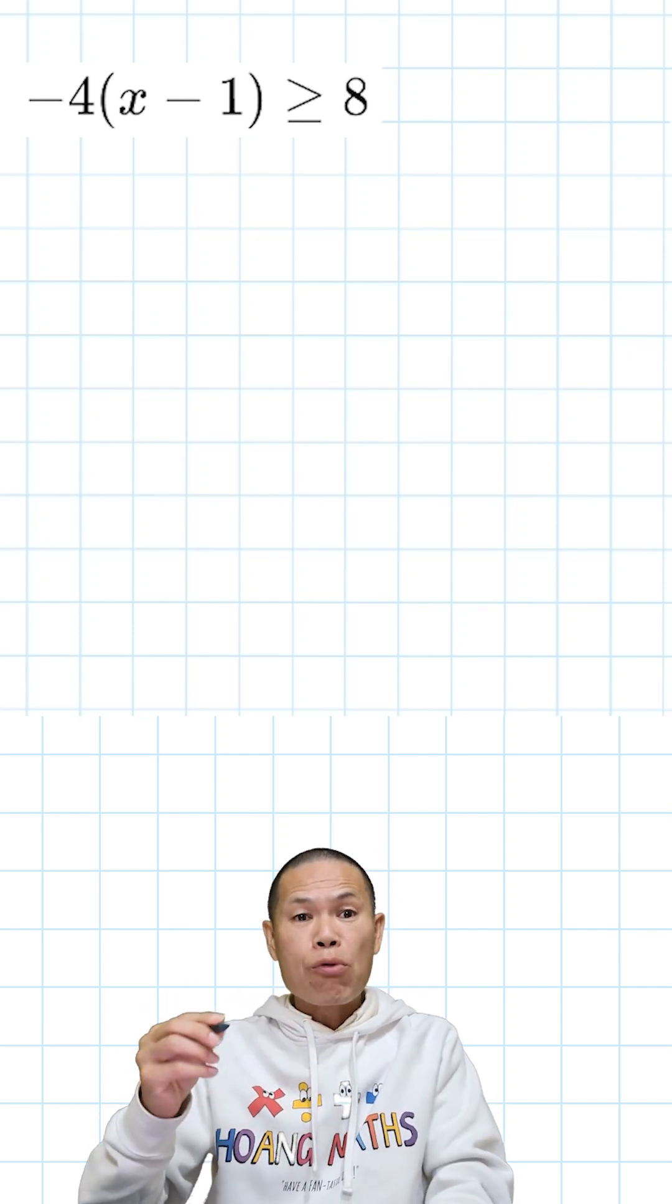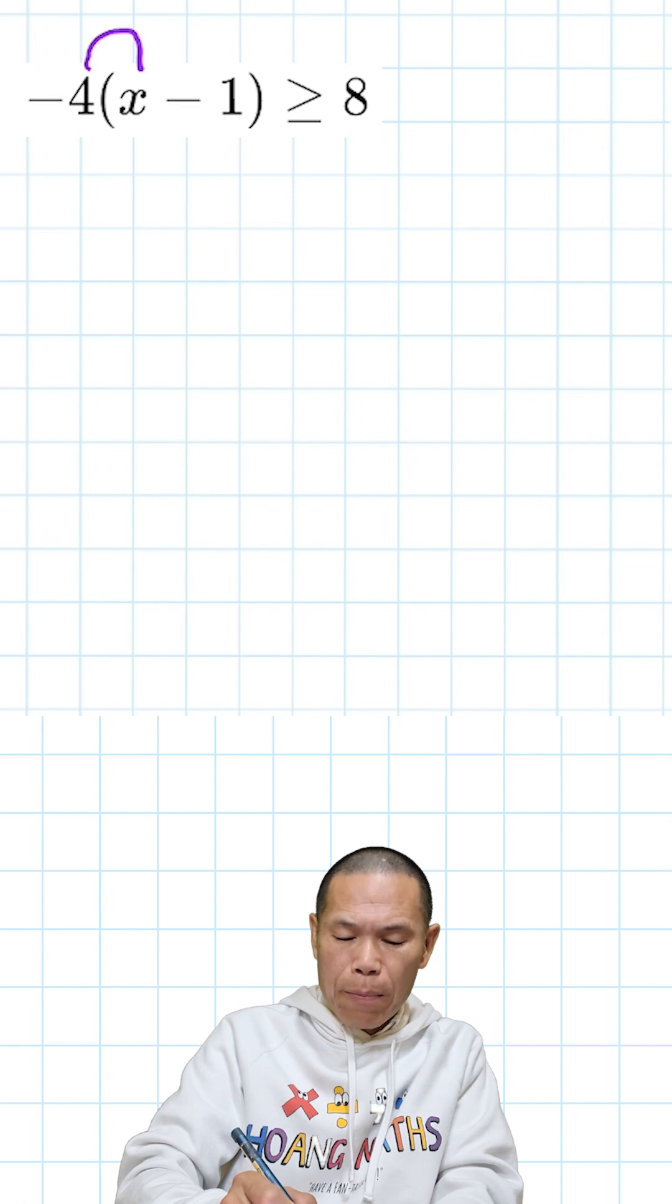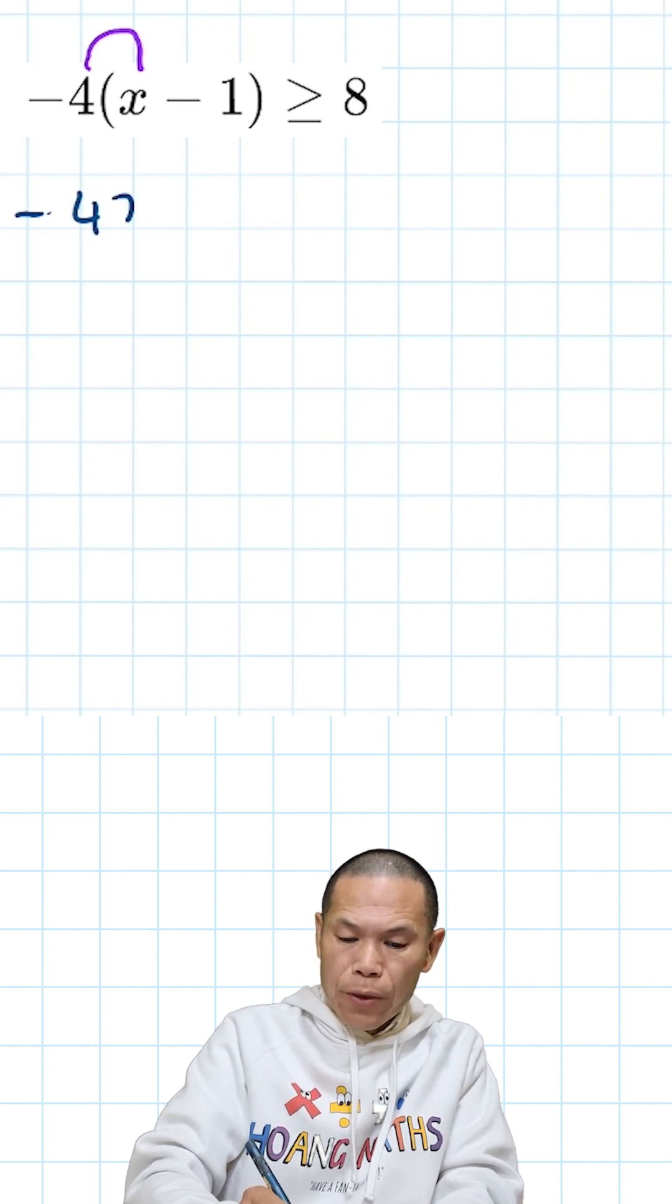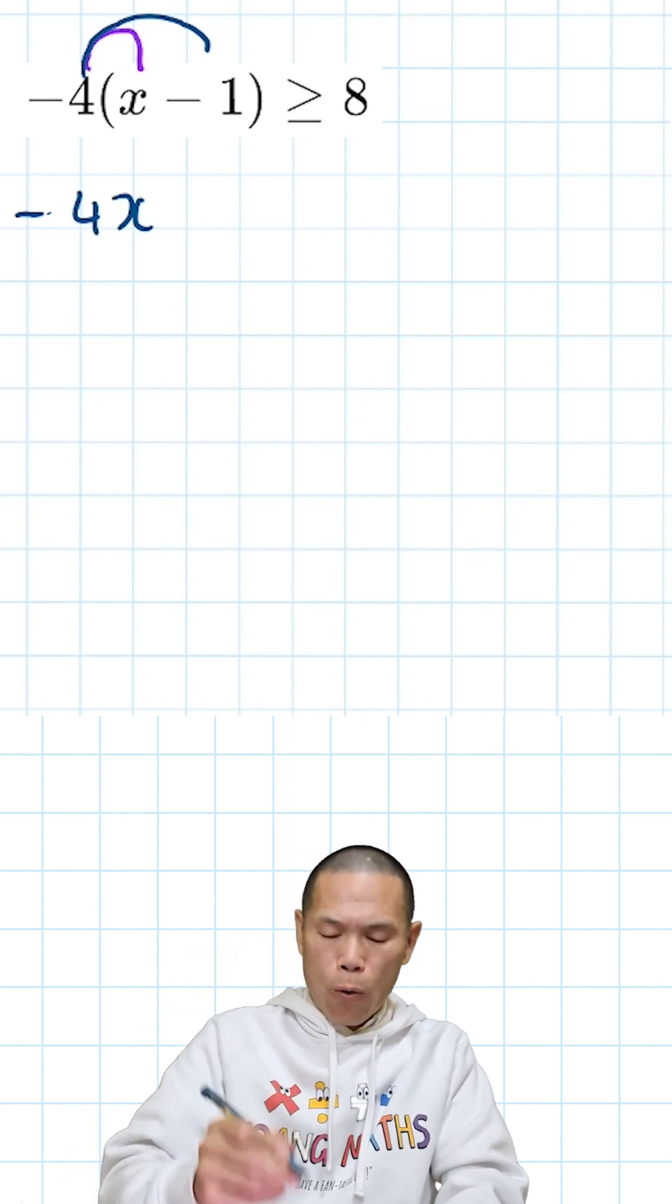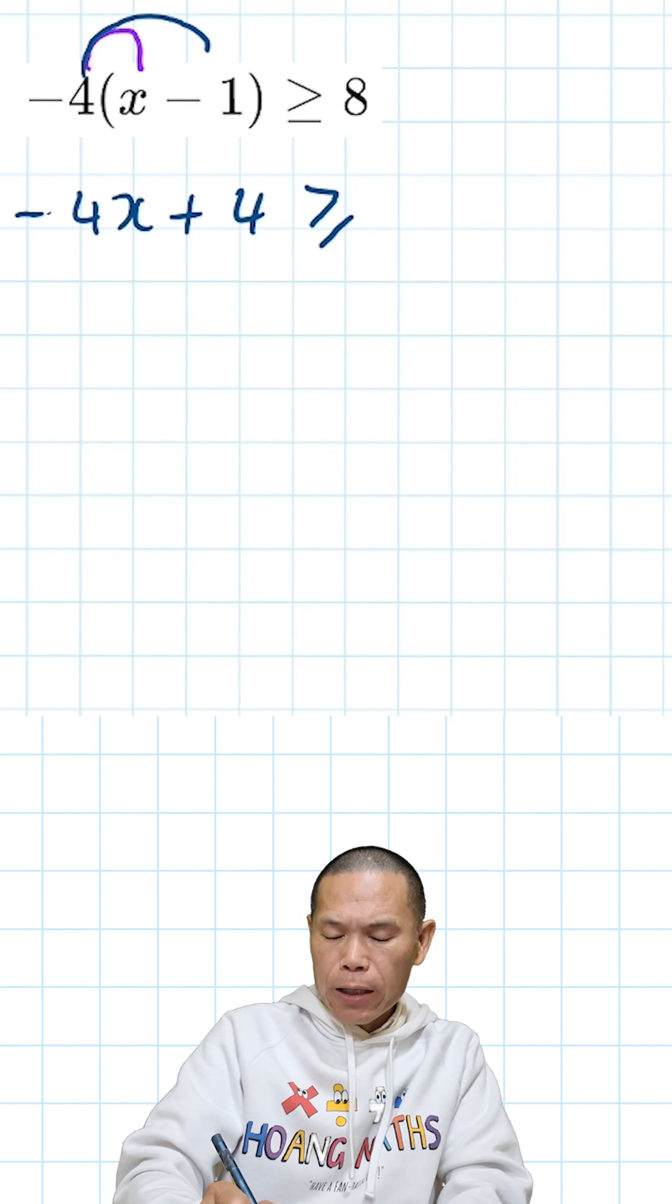First, let me remove the brackets. I times this negative 4 times x gives me negative 4x, and negative 4 times negative 1 gives me 4. So plus 4, and greater than or equal to 8.